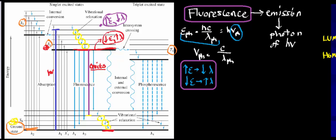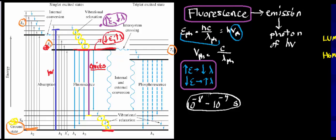Fluorescence has an approximate time limit — it occurs anywhere between 10 to the minus 8th to 10 to the minus 4th seconds, so it's a pretty quick transition. The molecule doesn't stay in the excited state for very long before emitting the photon. Instruments called spectrofluorimeters can measure fluorescence and help identify different molecules in a mixture, because different molecules fluoresce at different wavelengths.